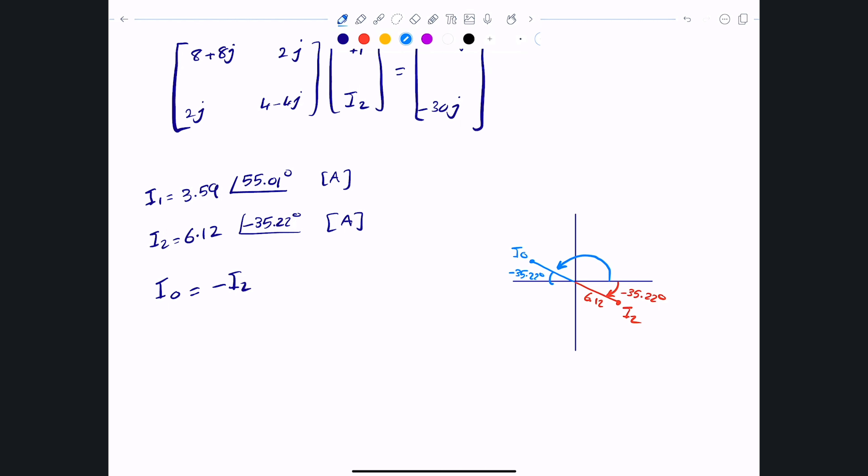If you decided to rotate it 180° in the positive direction, that means you need to figure out what this angle is. That simply can be computed as I0 = 6.12∠(-35.22° + 180°), which is 6.12∠144.78°.